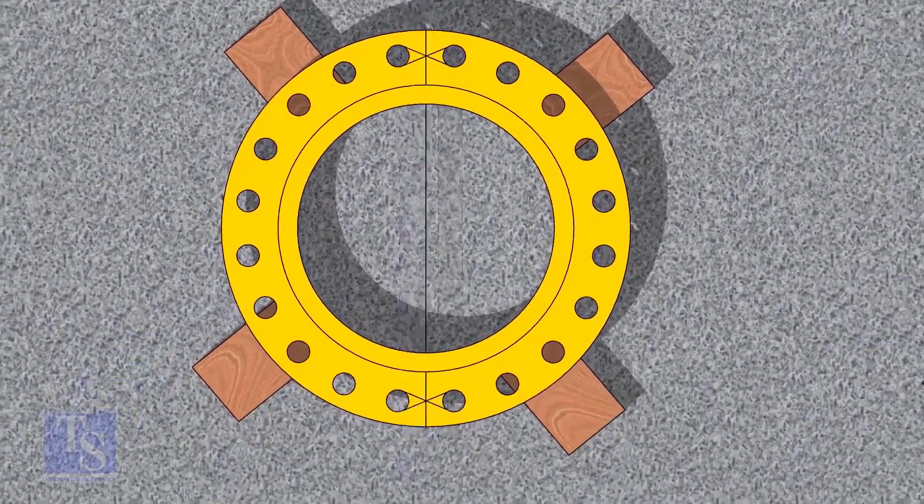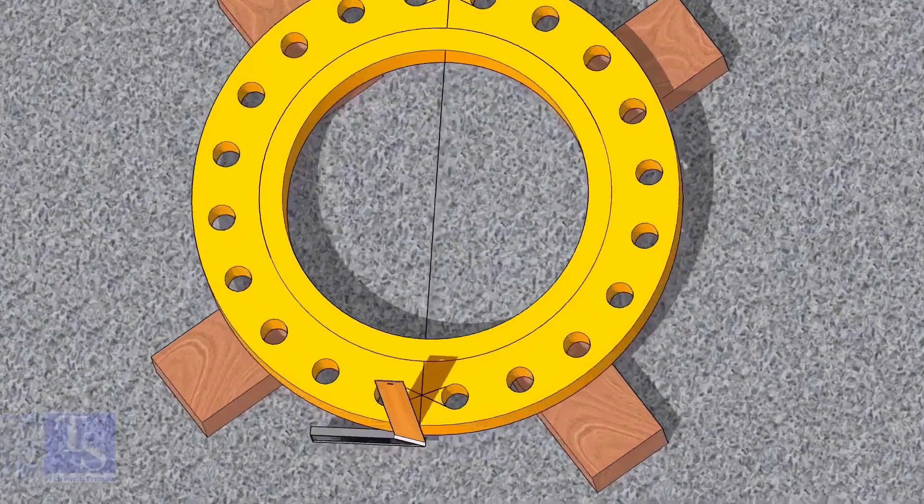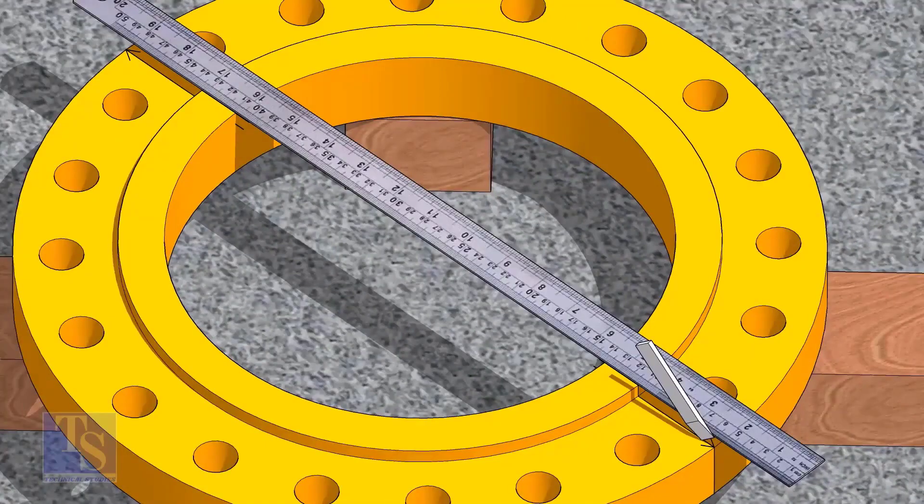Draw the center line of the flange as shown. Now, transfer the center line to the sides of the flange. Overturn the flange and transfer the center line on the back side of the flange.